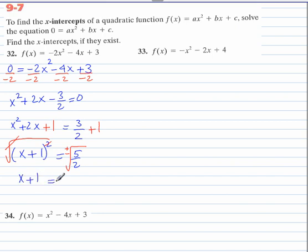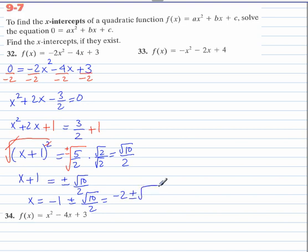So we get x plus 1 equals plus or minus. Let's rationalize this by multiplying top and bottom by radical 2. So we get radical 10 over 2. Now we're going to subtract 1 from both sides. So x equals negative 1 plus or minus radical 10 over 2. Get a common denominator. This becomes negative 2 over 2. So the answer is negative 2 plus or minus radical 10 all over 2.